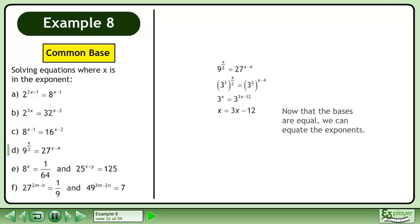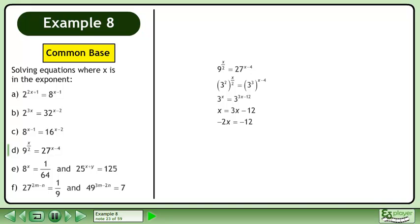Now that the bases are equal, we can equate the exponents. Simplify to get negative 2x equals negative 12. Divide both sides by negative 2 to get the answer, x equals 6.